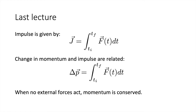Impulse is useful and is given the symbol J, equal to the integral of force with respect to time. So the change in momentum equals the impulse — if we know how force changes with time, we can find how momentum changes. When no external forces act, momentum is conserved, because the impulse and change in momentum are both zero.